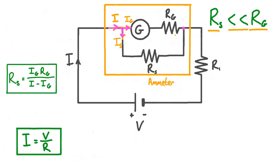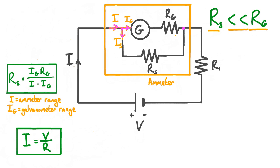In practice, ammeters have a maximum value of I that they can measure, and for this value of I, we expect the needle on the ammeter to be fully deflected. In other words, for the ammeter's maximum rated current I, we want the current in the galvanometer Ig to be the full deflection current of the galvanometer. Considering this specific case gives us a different way of interpreting the variables: we can think of I as the maximum current the ammeter can measure — the range of the ammeter — and Ig as the full deflection current of the galvanometer, or the range of the galvanometer.